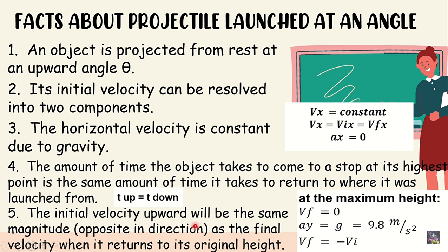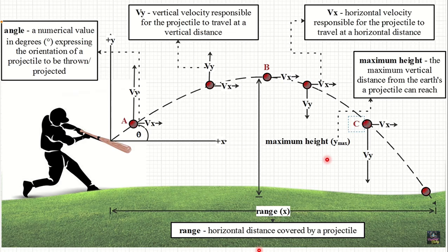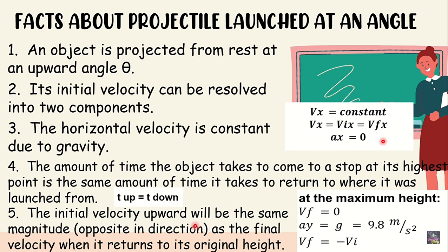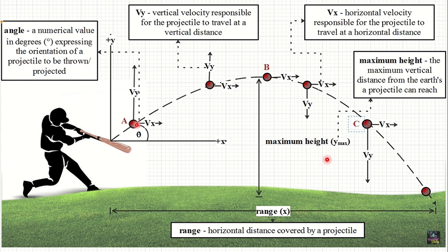The initial velocity upward will be the same magnitude as the final velocity when it returns to its original height. For example, if the initial velocity is 40 meters per second going upward, when it reaches the ground after reaching the maximum point, its velocity will also be 40 meters per second.